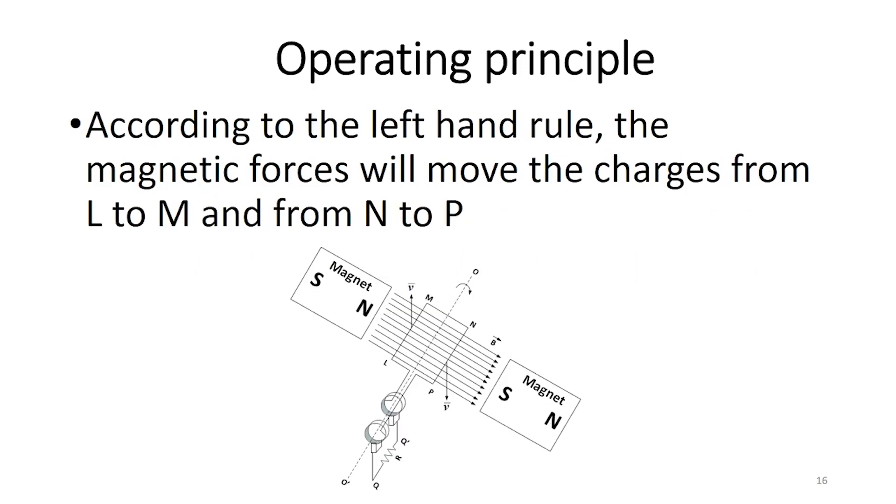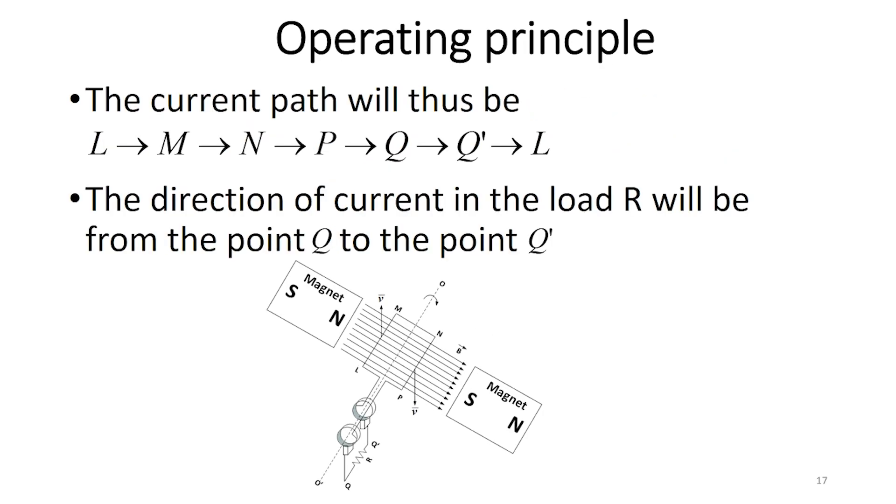According to the left-hand rule, the magnetic forces will move the charges from L to M and from N to P. The current path will thus be L towards M towards N towards P towards Q towards Q tag towards L. The direction of current in the load R will be from the point Q to the point Q tag.